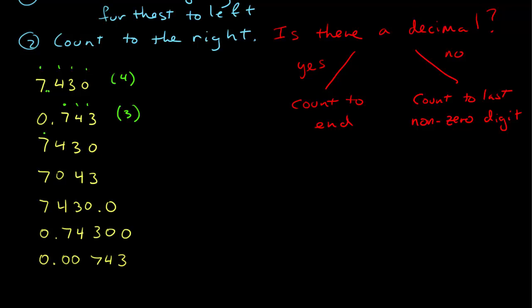Here, the furthest to the left is again the 7. This one doesn't have a decimal point, which means I only count to the last non-zero digit, which is 1, 2, 3, which is 3 is the last non-zero digit. So this has three significant figures.